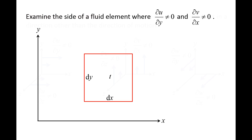Here we have a fluid element at time t with sides dx, dy, and dz. We are looking at the side of the fluid element, so dz is into the screen. We label the lower left corner of the fluid element as x0, y0, and the upper right corner as x0 plus dx, y0 plus dy.